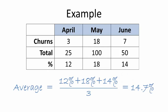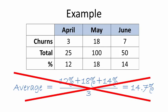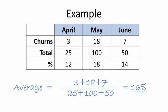But wait a minute, this is wrong. The true churn rate is the total churns divided by the total number of customers up for renewal in the period, or 16%.